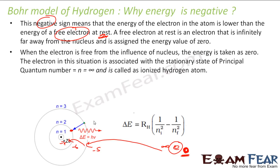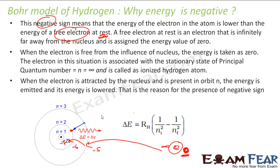When the electron is free from the nucleus's influence, its energy is taken to be zero. When it is attracted by the nucleus in orbit n, energy is emitted and lowered. You just keep going down the levels, keep losing energy, and the maximum you can do is reach n = 1.